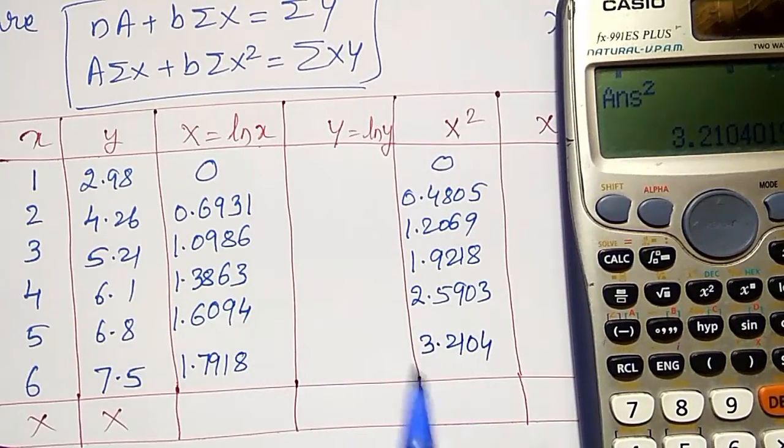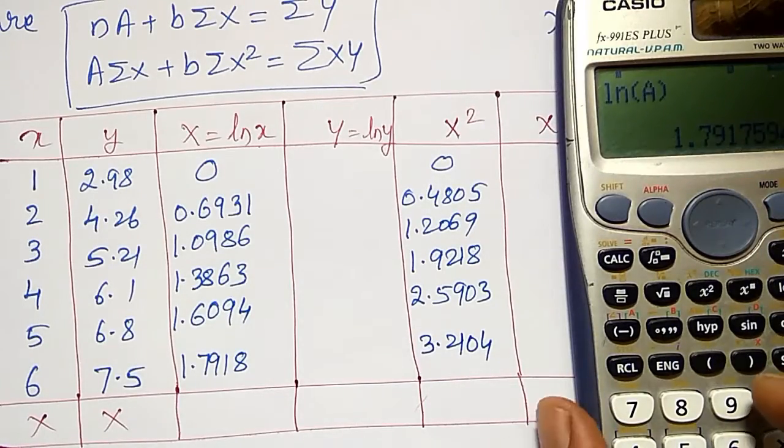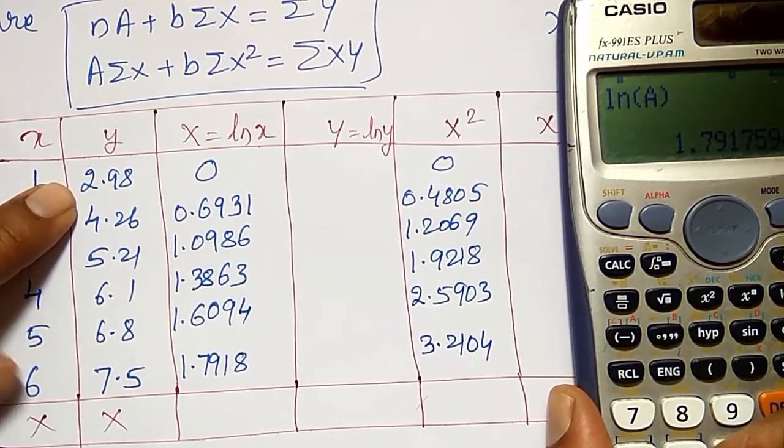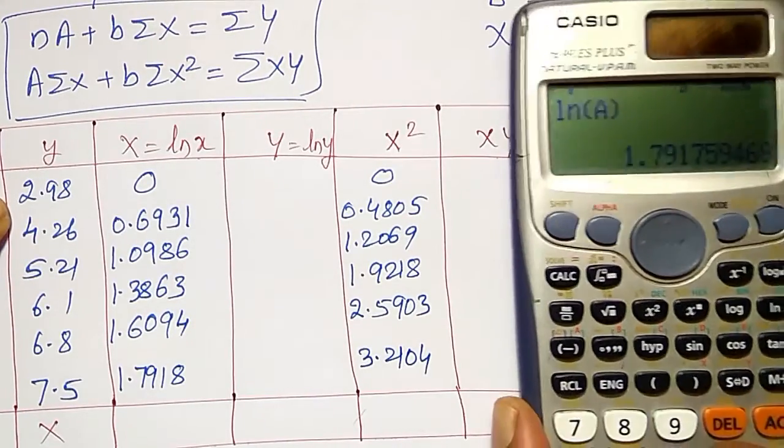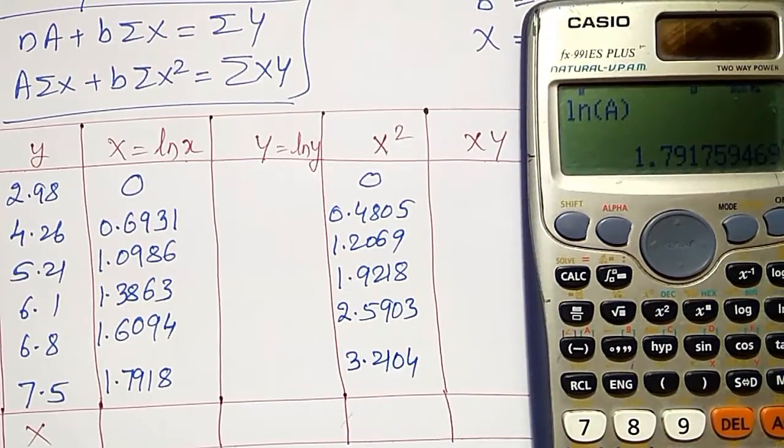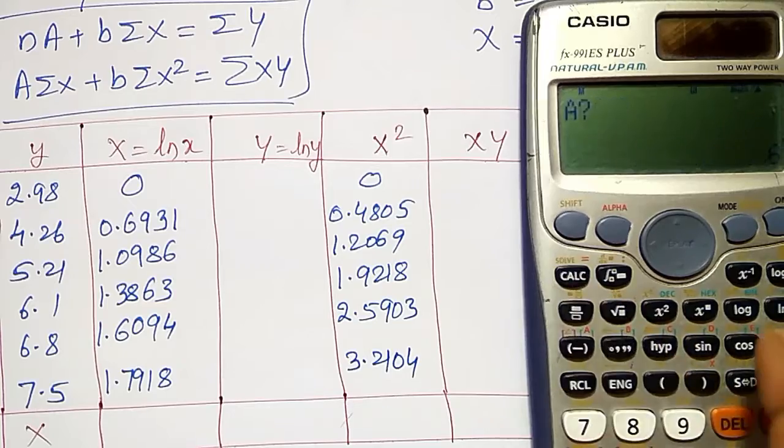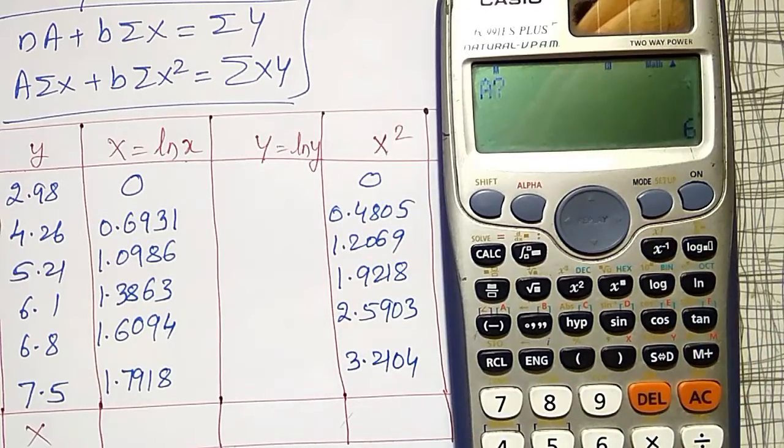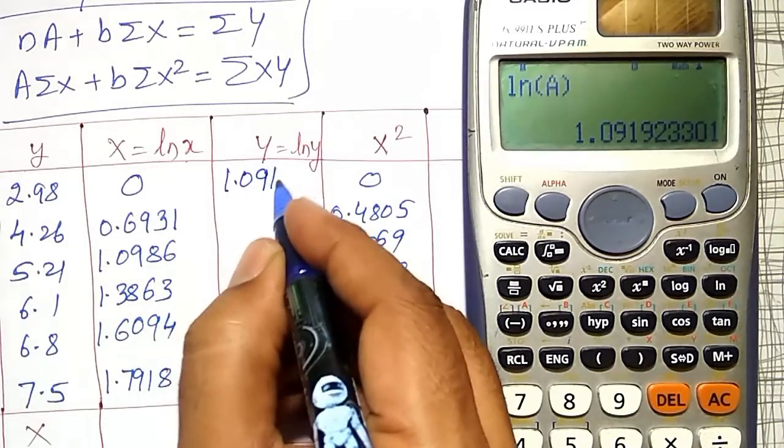Now log of y I want, same ln option, but I have to use y values. And xy I want. Both together I can use here. This one, ln, calc option, a value is 2.98, and its value comes out to 1.0919.